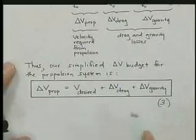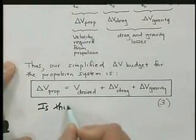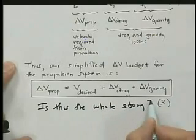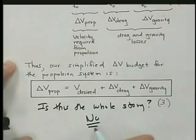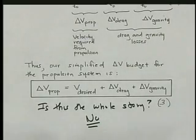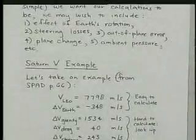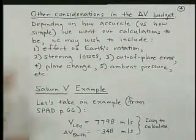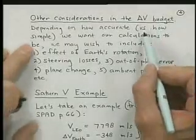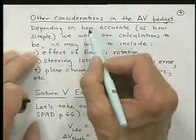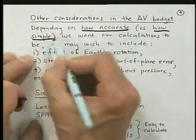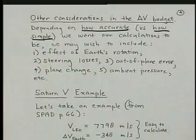You might wonder, is this the whole story? The answer is no. We have simplified tremendously, but we got some of the most important effects in there. There are many other considerations depending on how accurate you want to model the problem, or how accurate you need to model it. This is also versus how simple, so we have these competing things. How accurate? And how simple do you want it to be? If it's real simple, then it's not going to be as accurate.